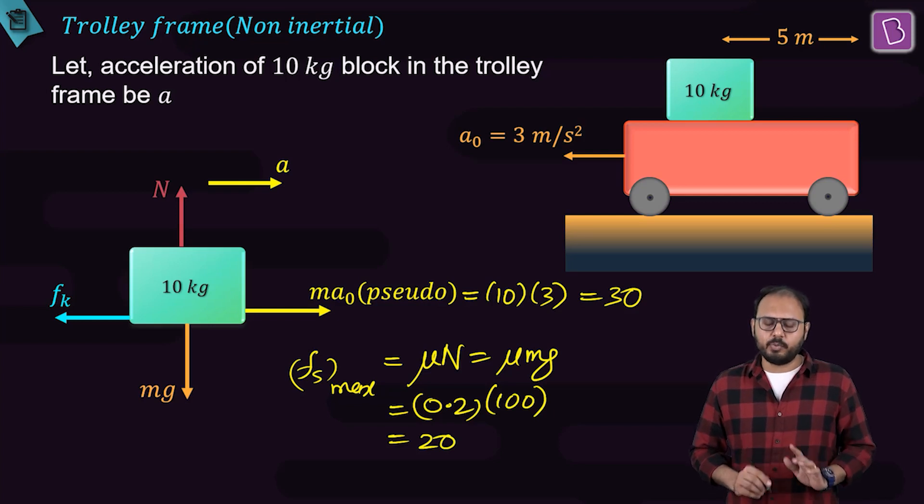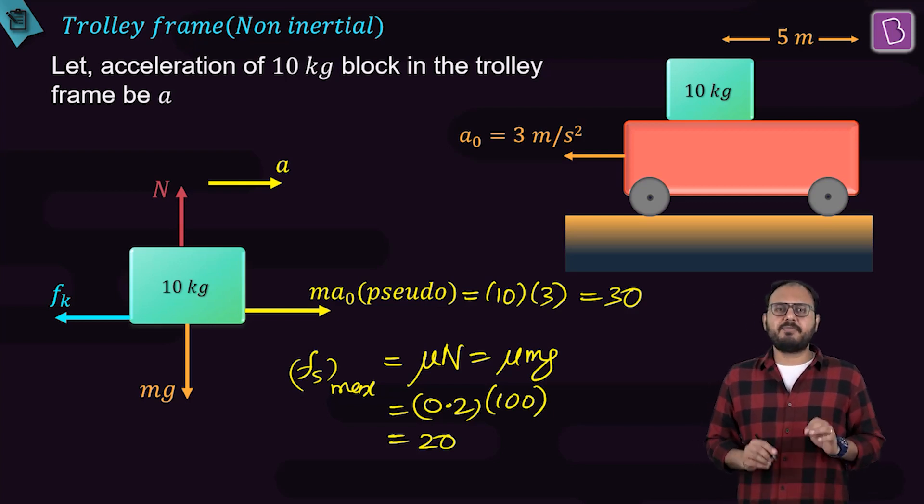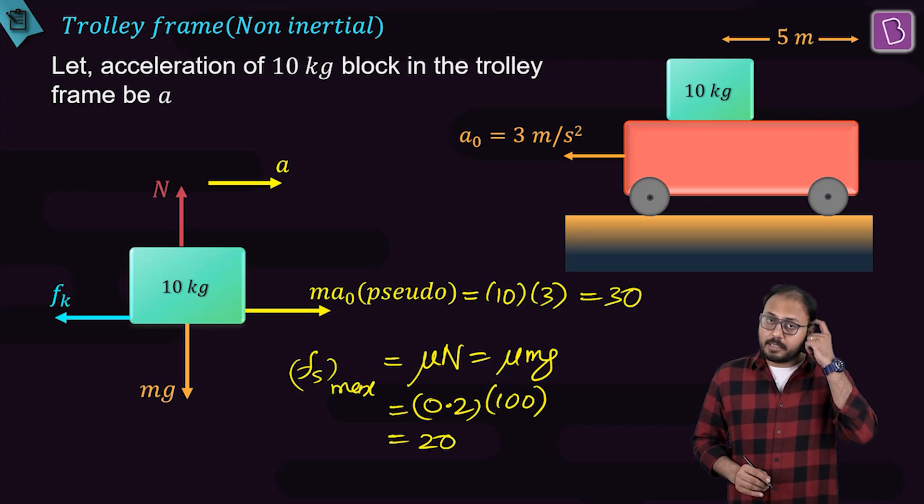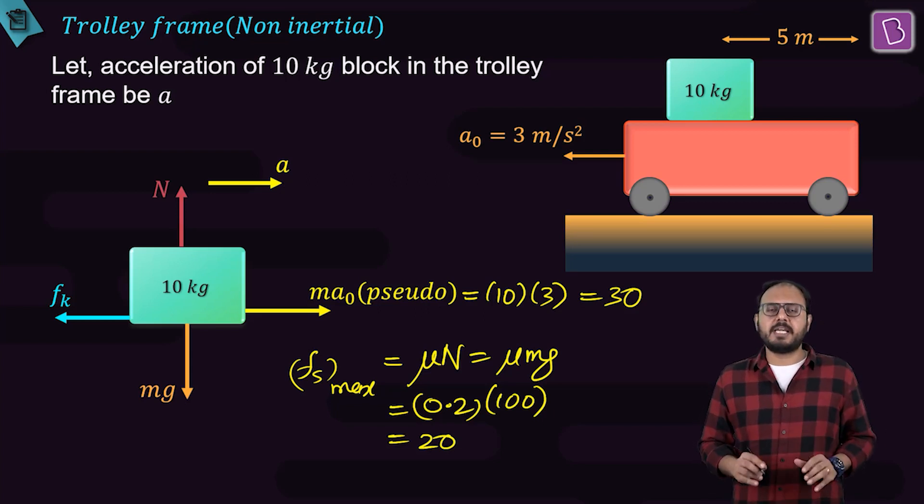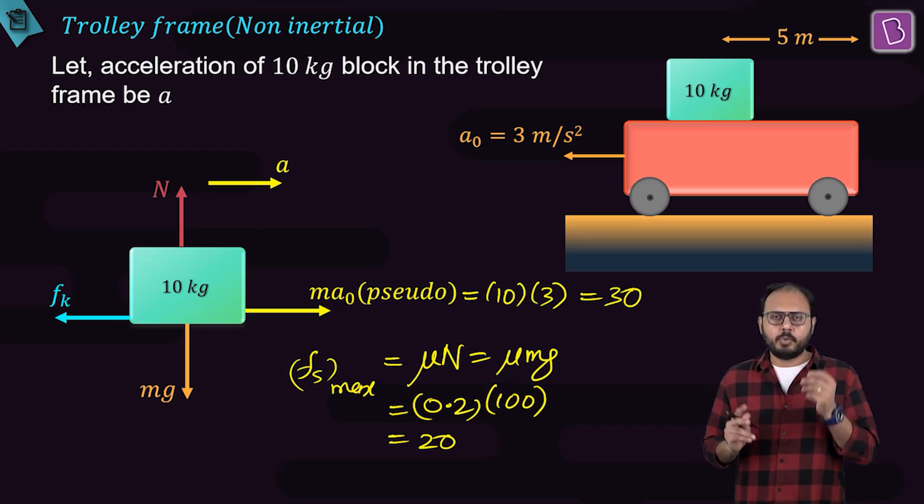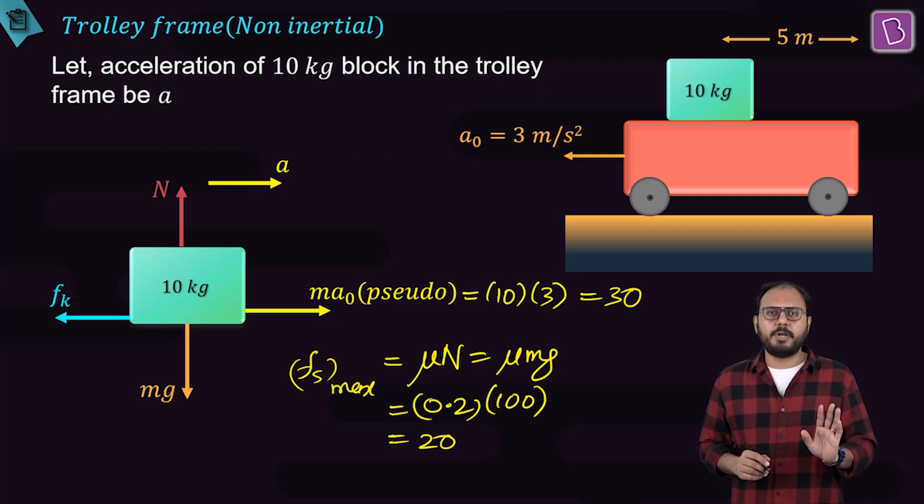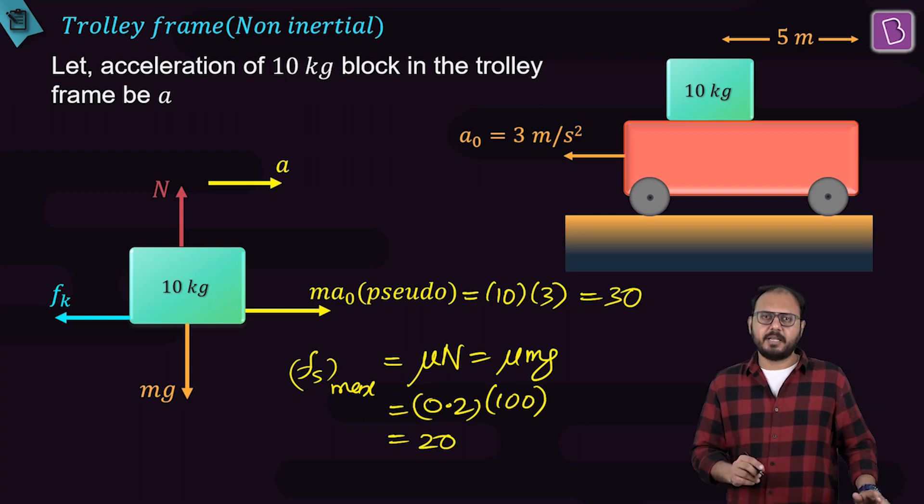Is pseudoforce value more than the maximum friction value? Yes. Do you agree the sliding will take place? Yes. What will be the nature of friction now? Kinetic. And kinetic is a fixed value equal to μkN. Since there is only one μ given, μs is 0.2, μk is 0.2, FSmax is 20, Fk is 20.